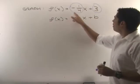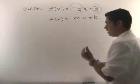If we can find the slope of a line and the y-intercept, we should be able to graph it, and here's how we do it.